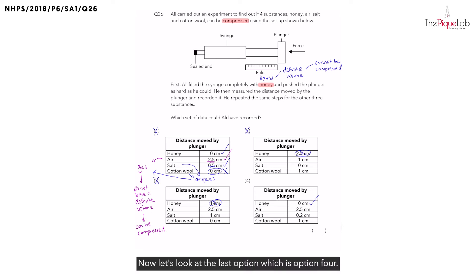Now, let's look at the last option, which is option 4. We see that option 4 has the same values for honey and air as option 1. So, we know that these two are definitely correct. But, what is the difference for salt and cotton wool? Now, we can see that the plunger was moved in more for cotton wool compared to salt. And why is that? Now, think about it for cotton wool. Do you think cotton contains larger or smaller air spaces than salt?